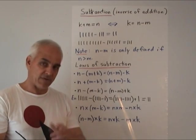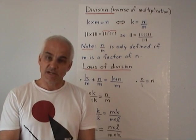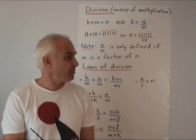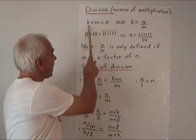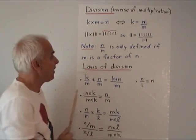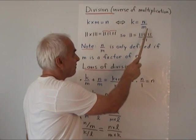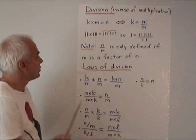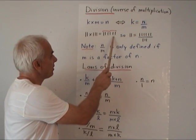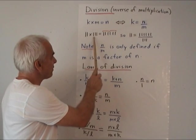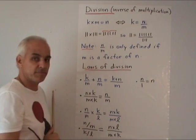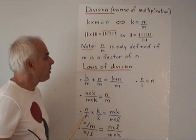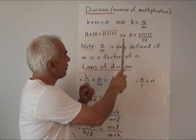Now let's have a look at division. Division is the hardest of the four main operations to understand. It is the inverse operation to multiplication. The definition is this: if K times M equals N, then we say that K equals N divided by M. For example, two times three is two groups of three — there's one group of three and another group of three; this number is one one one one one one (six).